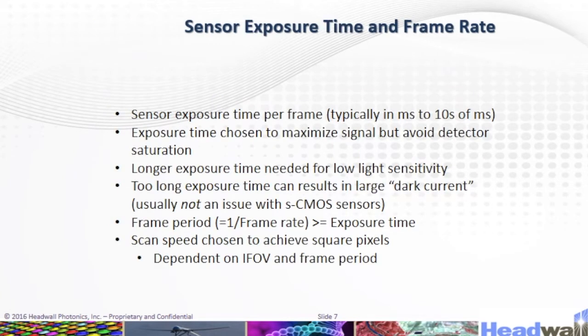Here is the sensor exposure time and frame rate. Sensor exposure time per frame is typically in milliseconds to tens of milliseconds. Exposure time is chosen to maximize signal but avoid detector saturation. Longer exposure time is needed for low-light sensitivity, but too long an exposure time can result in large dark current — usually not an issue with sCMOS sensors. Scan speed is chosen to achieve square pixels depending on FOV and frame period.